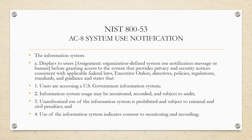The description reads: the information system displays to users before granting access to the system a notice that provides privacy and security notices consistent with applicable federal laws, executive orders, directives, policies, regulations, standards, and guidance, and states that users are accessing a US government information system, that usage may be monitored, recorded, and subject to audit, and that unauthorized use of the information system is prohibited and subject to criminal and civil penalties.